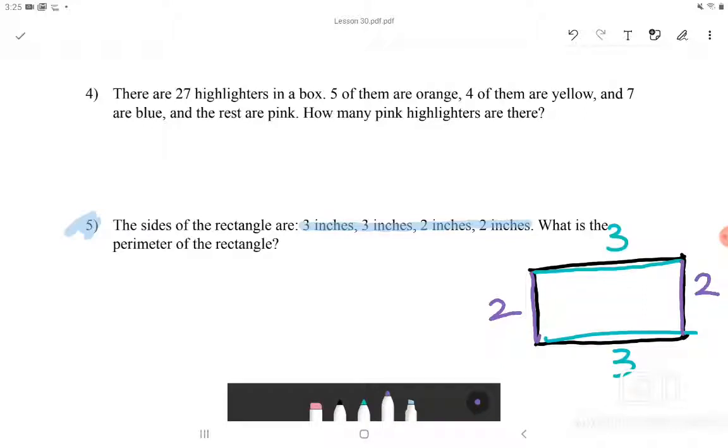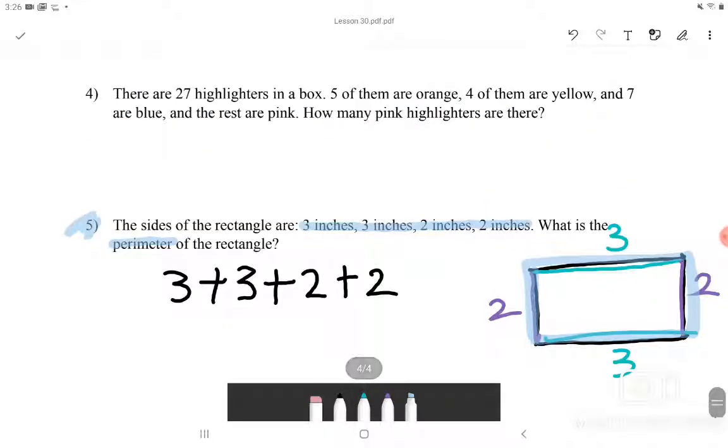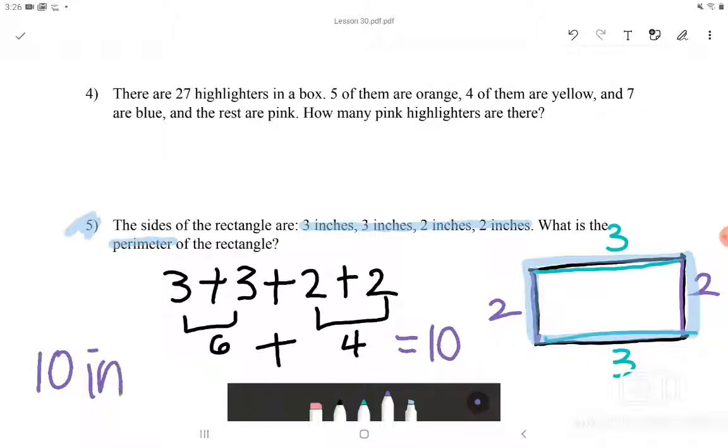Now that we have plugged in all the sides that the question shows, we would have to get what the perimeter of the rectangle is. Perimeter is just the length of the rectangle, like around the rectangle. So we would just have to add all 4 numbers. 3 plus 3 plus 2 plus 2. Let's first do 3 plus 3. 3 plus 3 is 6, and 2 plus 2 is 4. Now we're going to add these two numbers together, and we will get 10. So we know that the perimeter of the rectangle is 10 inches.